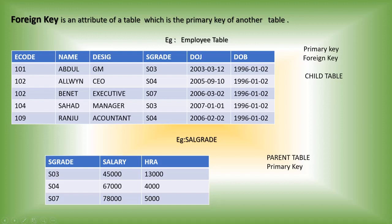The salgrade table is known as the parent table and the employee table is known as the child table. The table in which the foreign key is set as the primary key is the parent table, and the table in which you find the foreign key is the child table. When creating tables, you must first create the parent table, insert values into it, and then create the child table.